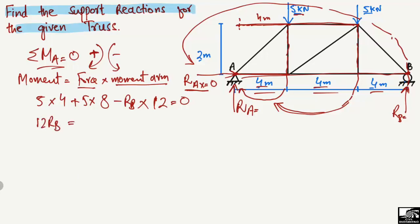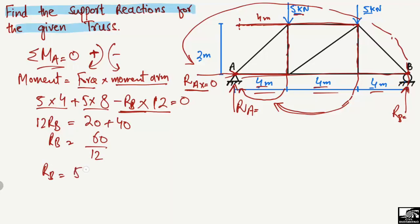Setting the summation of moments at A equal to zero: 5×4 + 5×8 − RB×12 = 0, which gives 20 + 40 = 12·RB, so 12·RB = 60, and RB = 60 ÷ 12 = 5 kN. The support reaction at B is 5 kN.